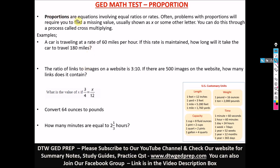Alright, so let's get on to this video now. So what are proportions? They're just equations involving equal ratios or rates. Often problems with proportion will require you to find a missing value. The missing value X, can be any letter. And what we do mostly with proportion is cross-multiplying. And you're going to see how we're going to do it in this GED practice test sample question.